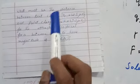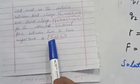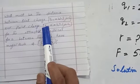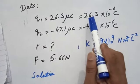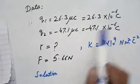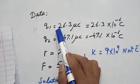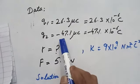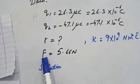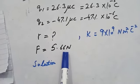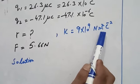We want to calculate the distance between these two charges where the attractive force is given. The data: charge Q1 is 26.3 microcoulombs (26.3 × 10⁻⁶ coulombs), and Q2 is -47.1 microcoulombs (47.1 × 10⁻⁶ coulombs). Q1 is positive and Q2 is negative. The attractive force is 5.66 newtons and the proportionality constant K is 9 × 10⁹ newton meter square per coulomb.